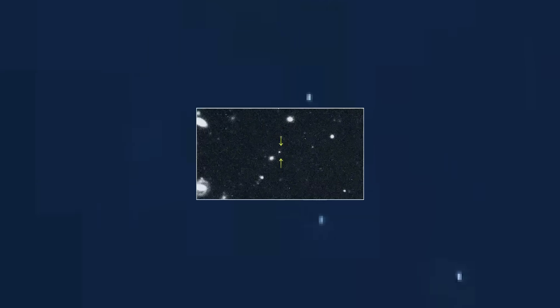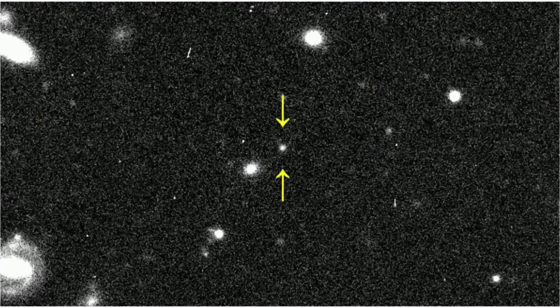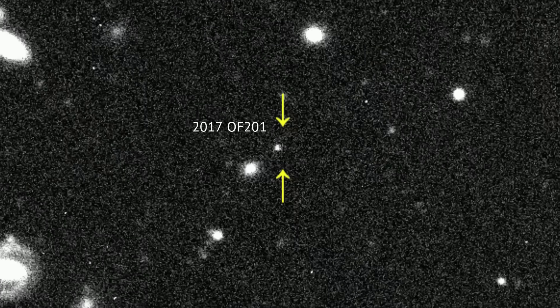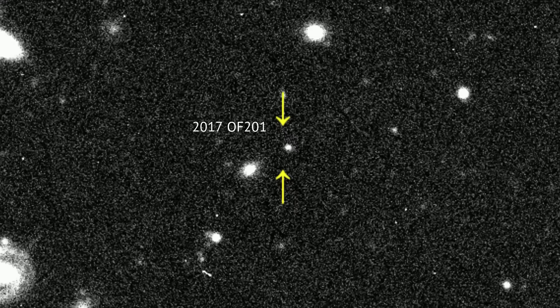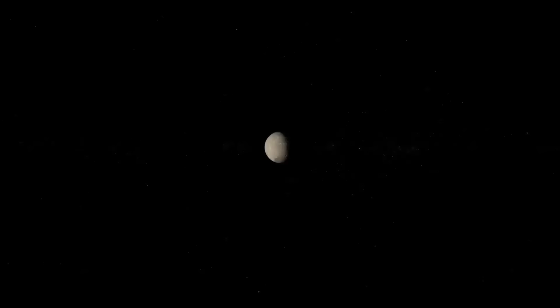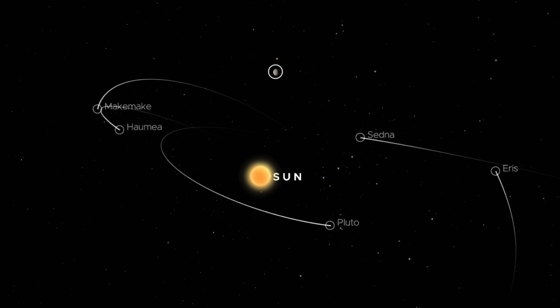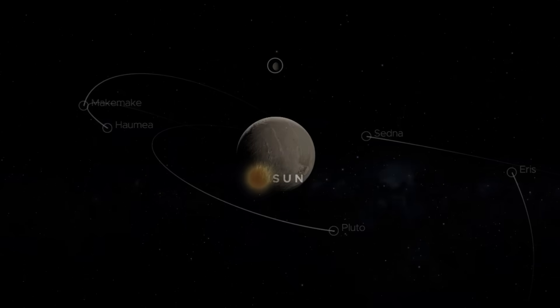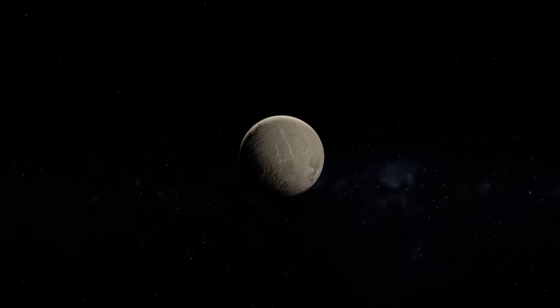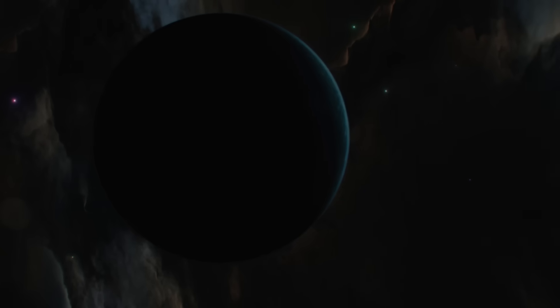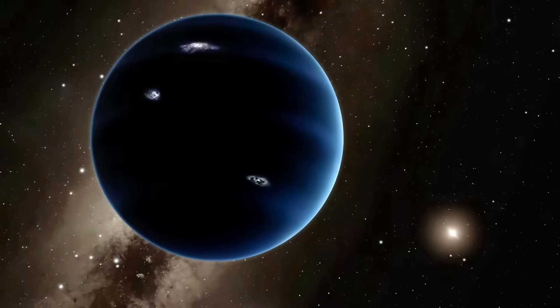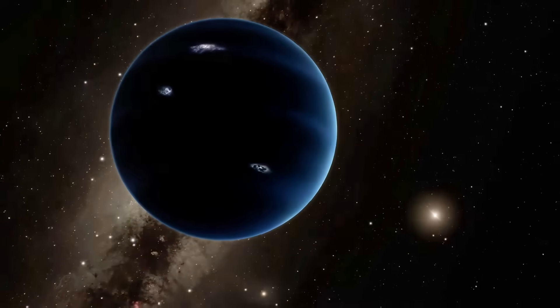And recently, while searching for signs of this elusive ninth planet, astronomers stumbled upon something unexpected and extraordinary. This, 2017 OF 201, a newly discovered dwarf planet candidate. But it isn't just an addition to the list of distant dwarf planets. It might be pointing to something inconvenient, something that could contradict the very reason we started searching for Planet 9 in the first place.